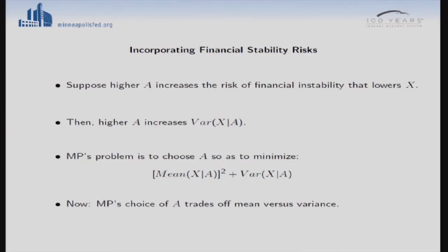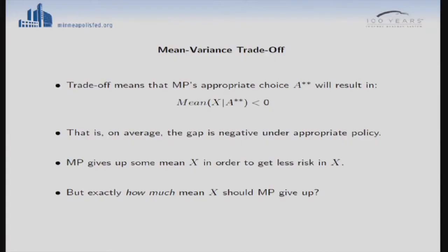Suppose higher A increases the risk of financial instability and that lowers your gap — lowers inflation, for example, or raises actual unemployment. Then this higher A is going to increase the variance. Now you can affect the variance, the fluctuations around your chosen mean. Now you face a tradeoff: you're going to trade off how close you are on average to getting the gap equal to zero with minimizing the fluctuations around that. The tradeoff means you're going to be willing to give up somewhat on getting the gap equal to zero — on average, the gap will be negative under appropriate policy, because you're willing to give up some mean in order to get less risk.